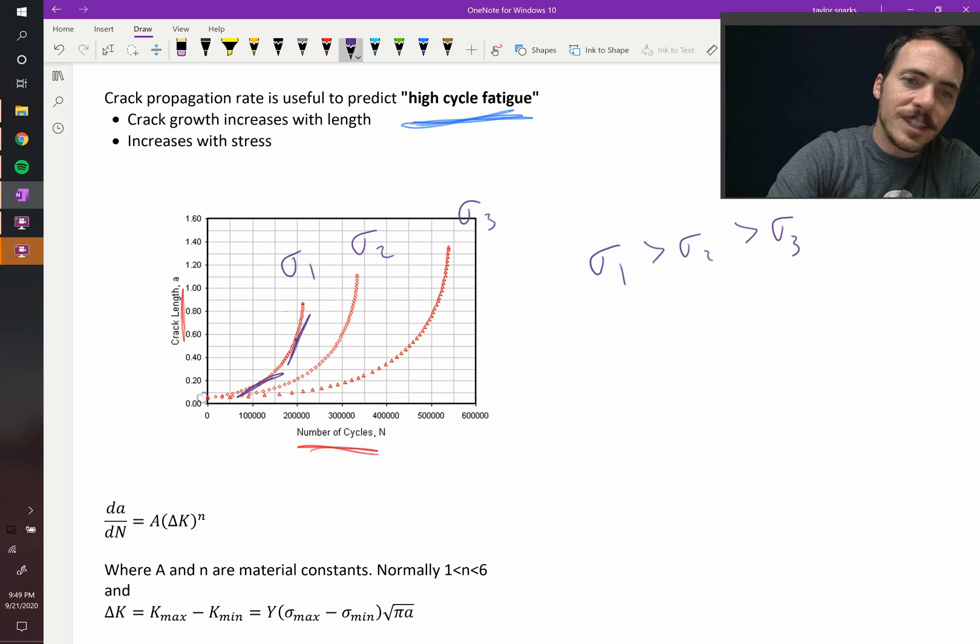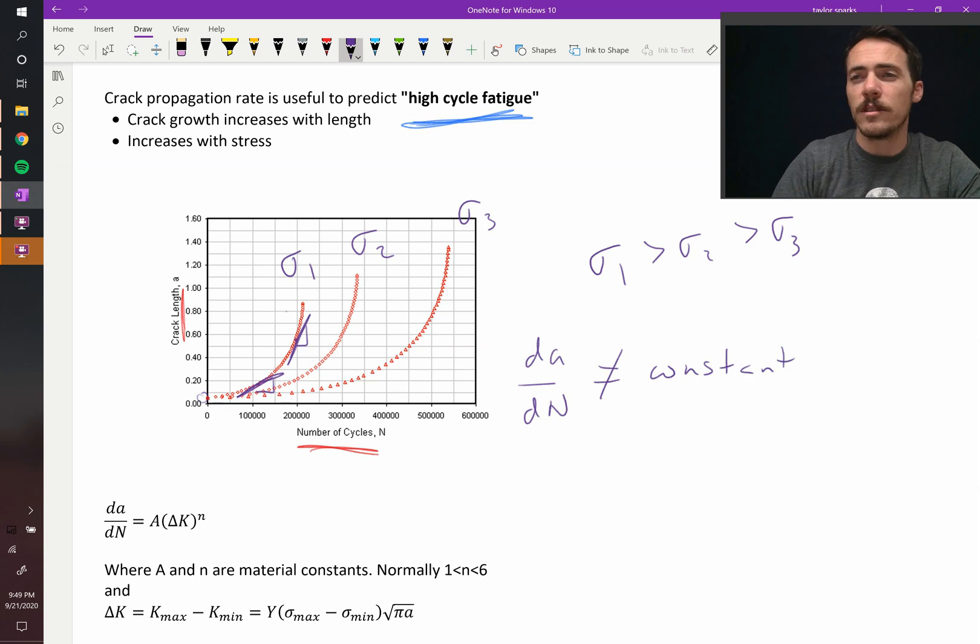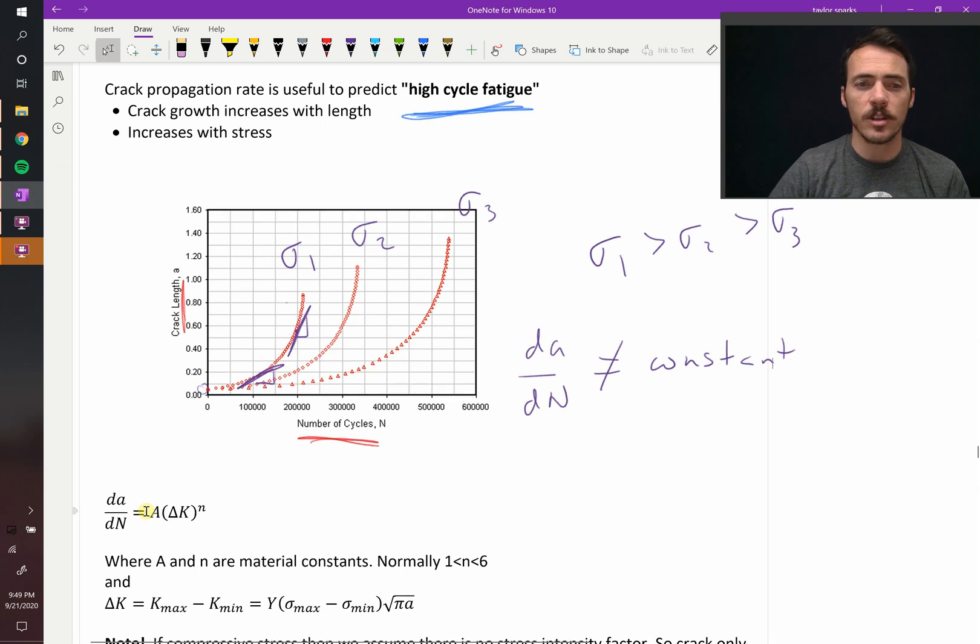So dA/dN, the slope of this line, dA/dN is not a constant. We just said that the rate increases the bigger it is. Therefore, we need an expression for how the crack growth rate is changing over time.